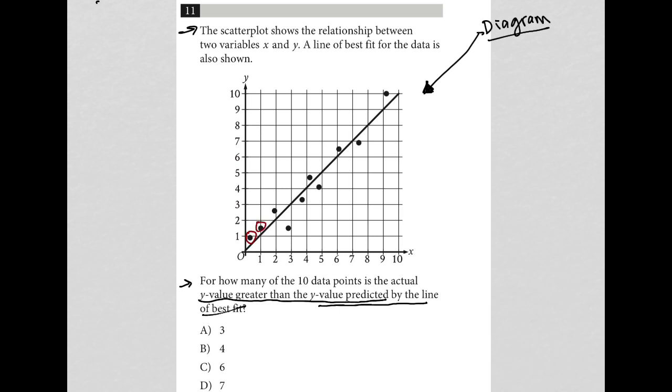Well we have one, two, three, four, five, and six. So there are six that are above the line.